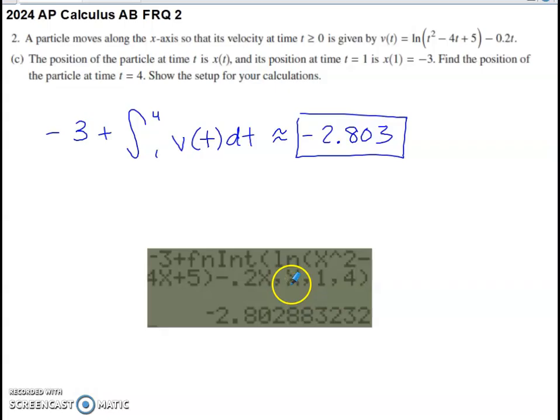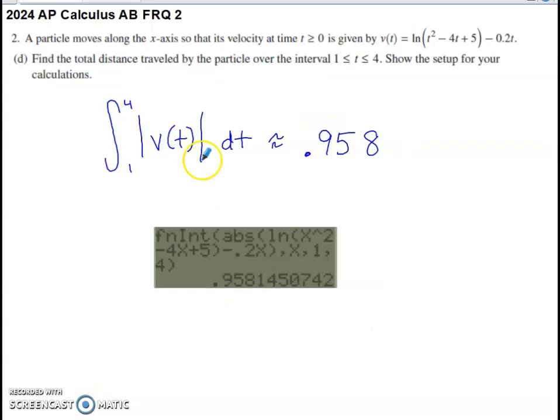Calculator is in place. You can use your numerical integral option on the calculator to determine that is going to give you approximately negative 2.803 as the position at time 4. Last part of this asks us to find the total distance traveled by the particle on the interval 1 to 4. Show the setup for your calculation. Speed is the absolute value of velocity.